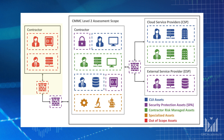Let's dig into this diagram. The items on the left in red are out-of-scope — notice how they are logically separated from the in-scope boundary. Within the CMMC assessment scope, the contractor boundary includes multiple asset types. It shows a purple lock and safe which are security protection assets contributing to the physical security requirements of CMMC. There are also contractor risk-managed assets in green — for example, an internal ticketing system with DLP technology and a policy banner to prevent CUI from being uploaded. Below that are CUI assets including a person and a database, and some specialized assets at the bottom.